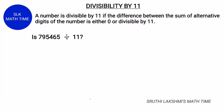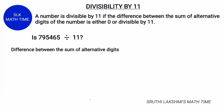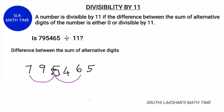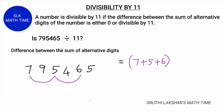Let's see an example. Is 795465 divisible by 11? First, let's see if the difference between the sum of alternative digits is divisible by 11. The alternative digits are 7, 5, and 6. So we add them together: 7 plus 5 plus 6.